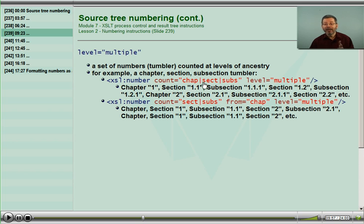We use a union pattern to indicate all of the things that are being counted. But the processor, looking up the ancestry, will do this count at every part of the ancestry that has one of the items being counted. It will then do a level equals single at that level for all of the things being counted.